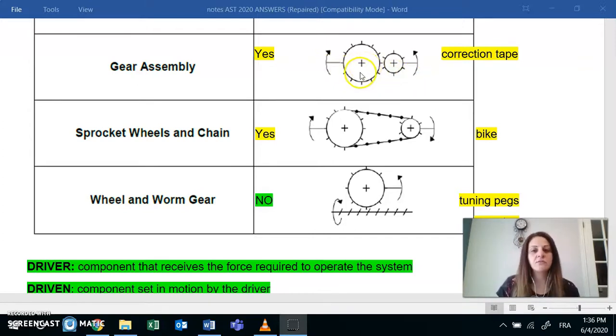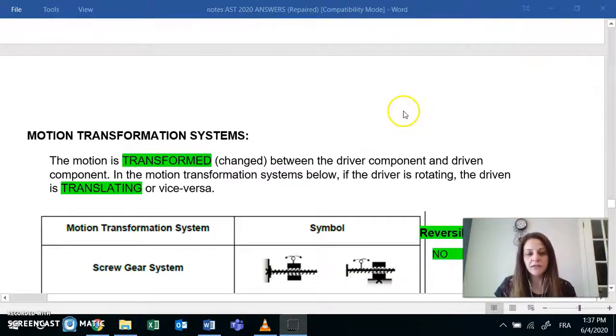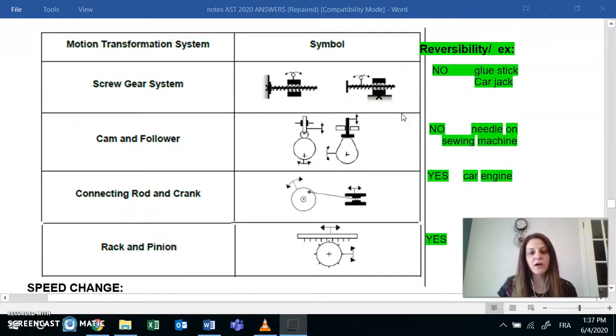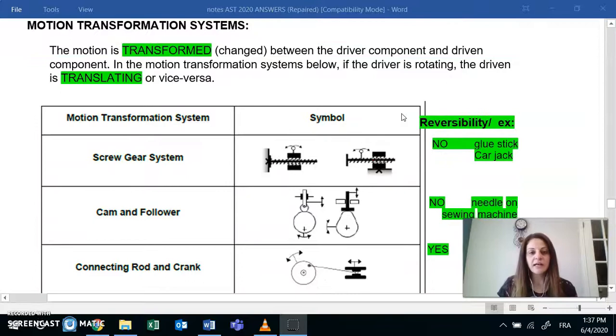So in here we have, for example, in the gear assembly, we had a rotation which caused another rotation. But today we're looking at transformation, so the possibility that the components will rotate and the other component will translate, and vice versa.